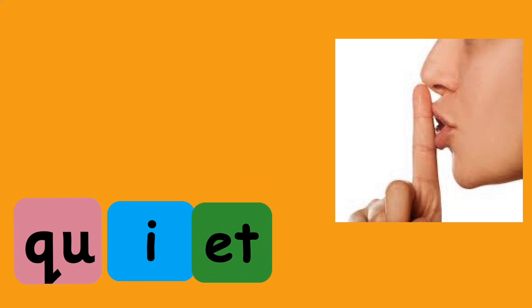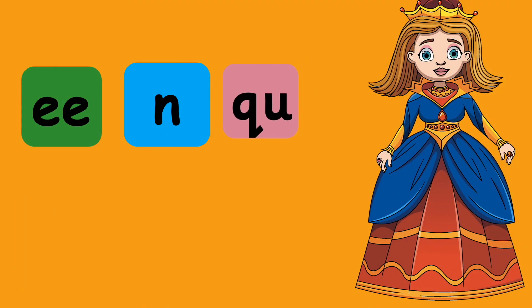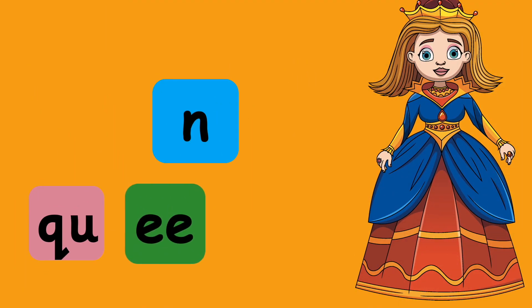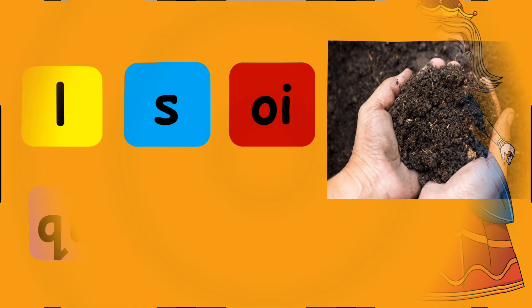Unscramble the letters to form a word. What's the word? Quiet. Right. Next. And the word is... You're right! Queen. Next word.